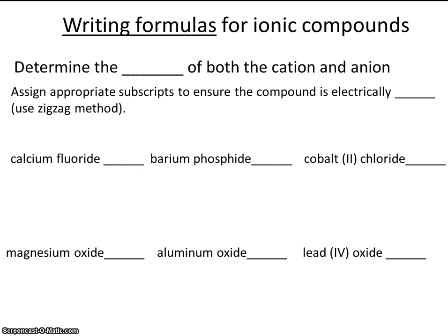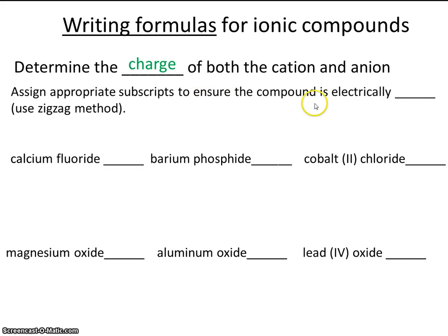In a previous video, we learned how to name ionic compounds. In this video, we're going to be writing formulas for ionic compounds. First, determine the charge of both the anion and the cation. Then we'll assign appropriate subscripts to ensure the compound is electrically neutral. A way to ensure the compound has the right number of positives and negatives is to use the zigzag method.